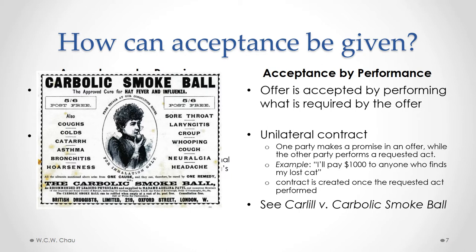The classic case of a unilateral contract is called Carlyle versus Carbolic Smokeball. You can read about that case in the textbook materials.